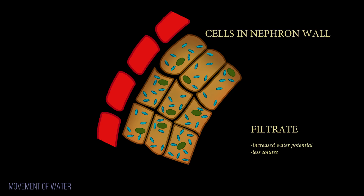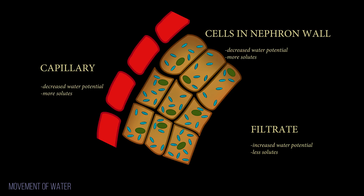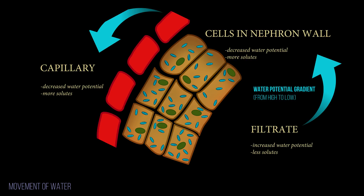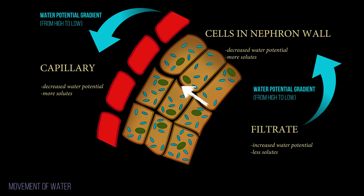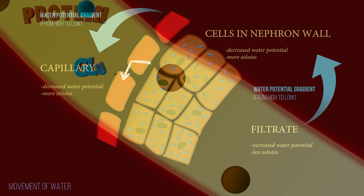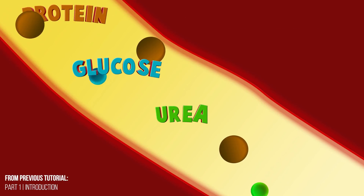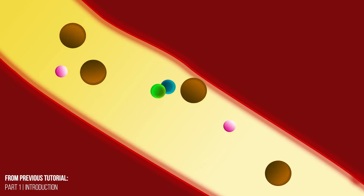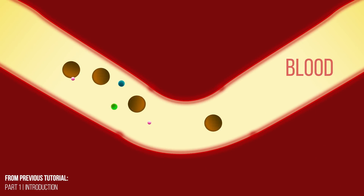The water potential inside the cells in the nephron walls and inside the blood capillaries is decreasing as these solutes move into them, so a water potential gradient builds up. Water molecules move down this gradient out of the nephron and into the blood, and as the blood flows away, so does the water and other reabsorbed substances.